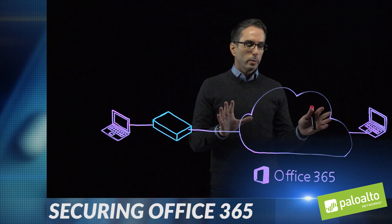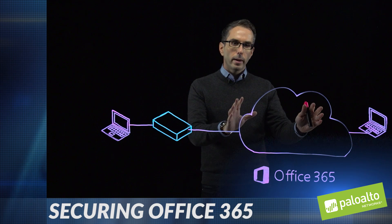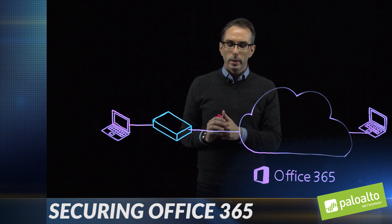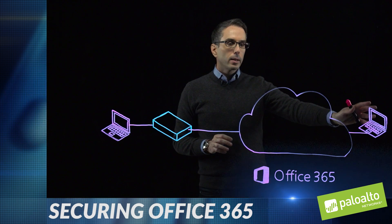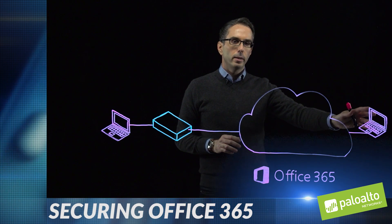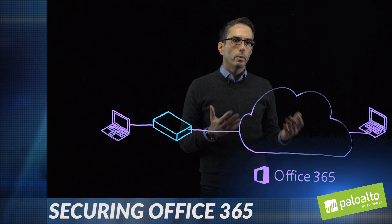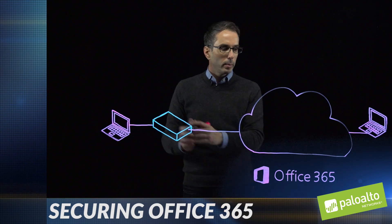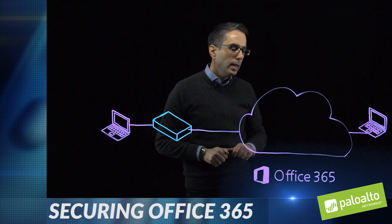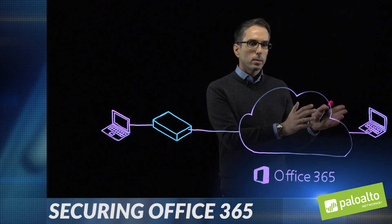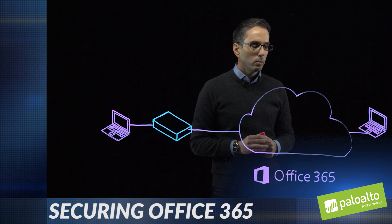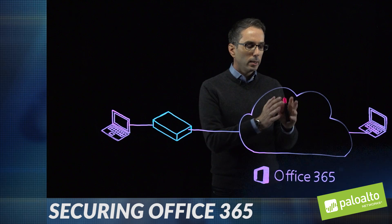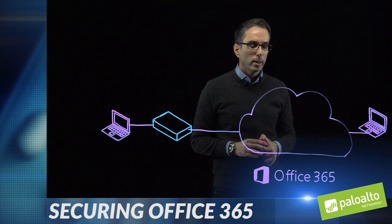First we're going to look at the scenario we have here. We have an Office 365 application in the cloud connected through a firewall to users within the network, and then we have an external collaborator — which is one of the most common reasons why people use these SaaS applications — for sharing data not just within the company but with external people as well. This presents some security risks and challenges with threat exposure, data risk exposure, and challenges with external collaboration.